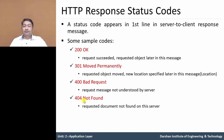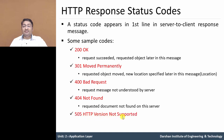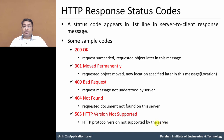Next one is 404 Not Found, meaning the requested document or object was not found on the server — the server has no object which was requested by the client. Next one is 505 HTTP Version Not Supported — the client requests using an HTTP version that is not supported by the server, and the server replies with a 505 status line HTTP Version Not Supported message.